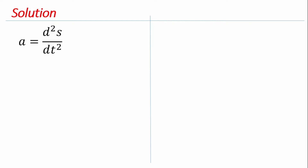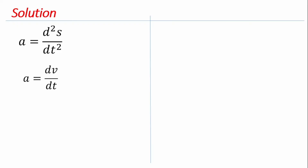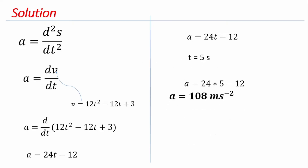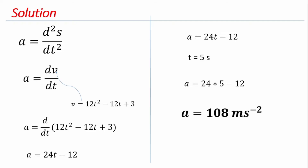Acceleration is obtained by differentiating the velocity equation, since a = dv/dt. We differentiate v = 12t² − 12t + 3 to get the acceleration equation. Then we substitute t = 5 seconds into the acceleration equation and get a = 108 meters per second squared.